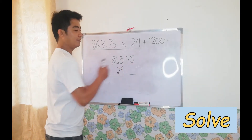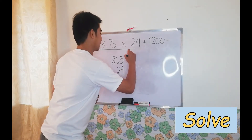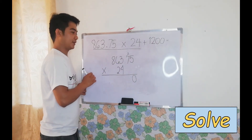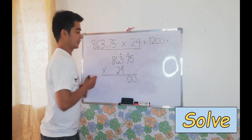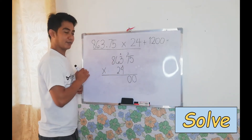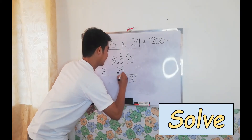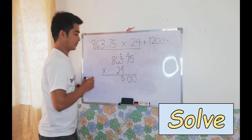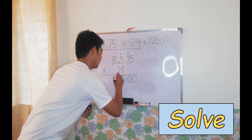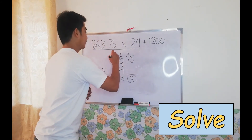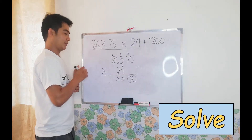Let's proceed with the multiplication. 4 times 5 equals 20 — write 0 ones and regroup 2 tens. 4 times 7 equals 28, plus 2 equals 30 — write 0 ones and regroup 3 tens. 4 times 3 equals 12, plus 3 equals 15 — write 5 ones and regroup 1 ten. 4 times 6 equals 24, plus 1 equals 25 — write 5 ones and regroup 2 tens. 4 times 8 equals 32, plus 2 equals 34.